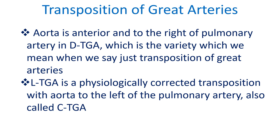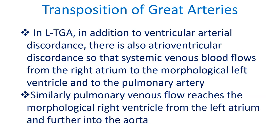LTGA is a physiologically corrected transposition with the aorta to the left of the pulmonary artery, also called CTGA. In LTGA, in addition to ventriculo-arterial discordance, there is also atrioventricular discordance, so that systemic venous blood flows from the right atrium to the morphological left ventricle and to the pulmonary artery. Similarly, pulmonary venous flow reaches the morphological right ventricle from the left atrium and further into the aorta.